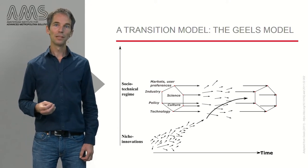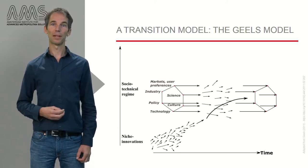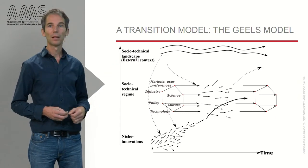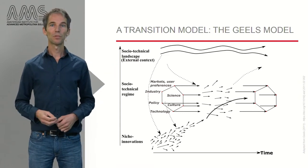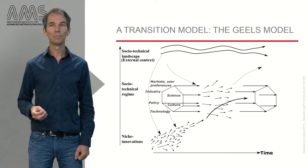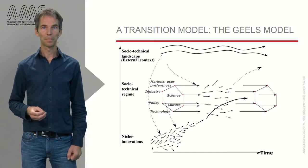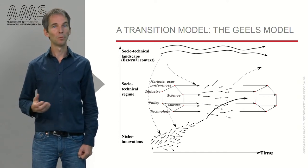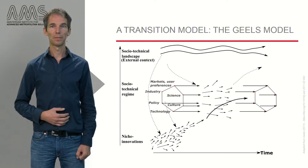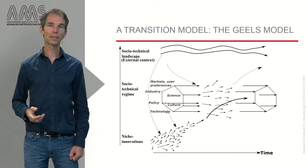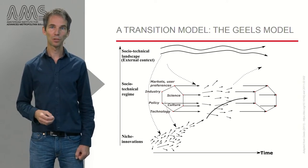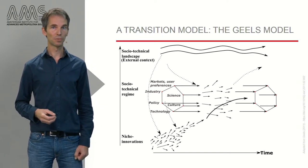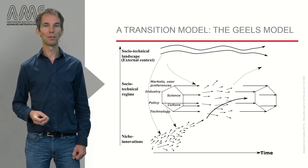Next to the level of niches and regimes, there is a third level, so-called socio-technical landscape. This is another word for the wider context of all regimes together. Think of world economy, the geopolitical landscape, global warming. Large scale factors from the landscape level may put pressure on the current regimes and thereby open up the regime for niche innovations to enter from below.